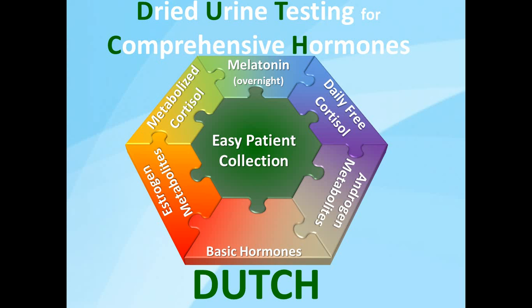That's why this testing model — dried urine testing for comprehensive hormones, or DUTCH for short — is much more comprehensive for figuring out what's going on with your patient. You can look at basic hormones, androgens and estrogens along with their metabolites, and in the case of adrenals you're looking at that daily free cortisol pattern as well as metabolized cortisol. You can also look at things like melatonin, and the patient collection is really easy.